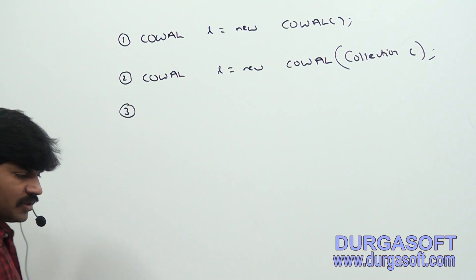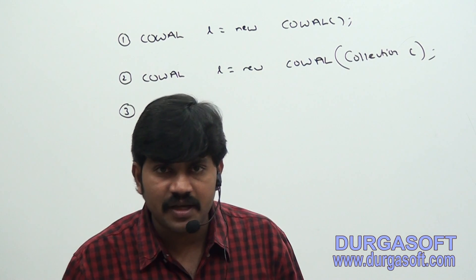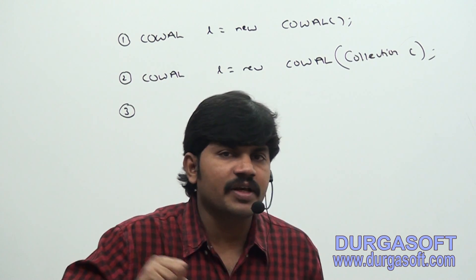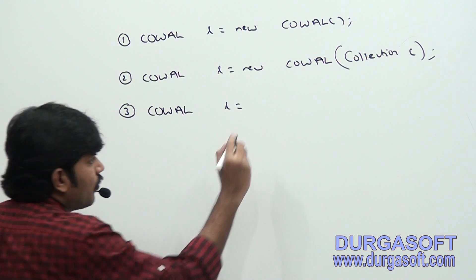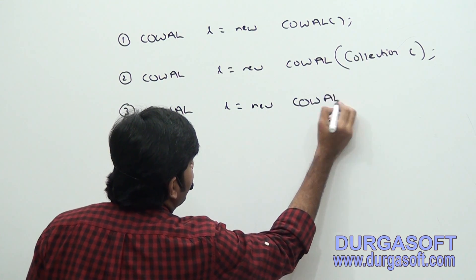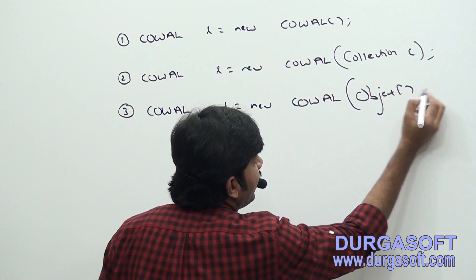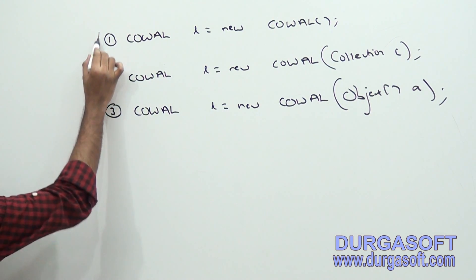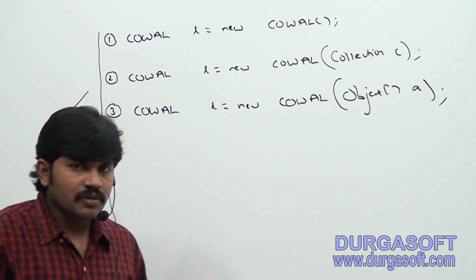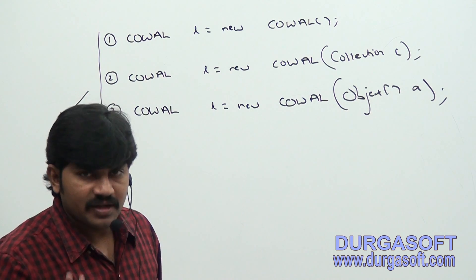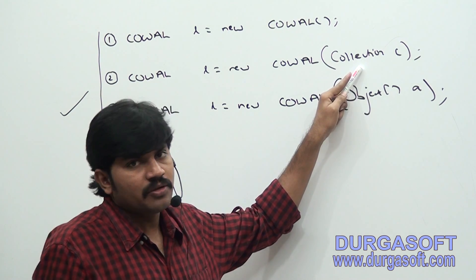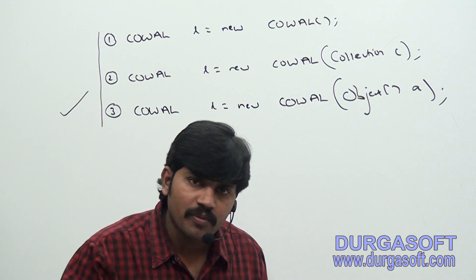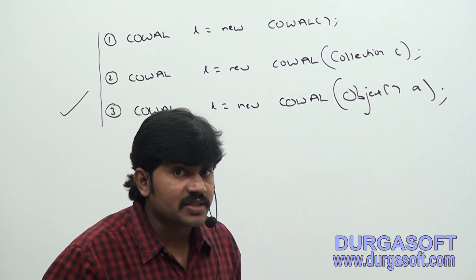The third constructor: if an object array is there, for the given object array, how we can create a CopyOnWriteArrayList — CopyOnWriteArrayList l = new CopyOnWriteArrayList(objectArray). So there are three constructors: no-argument, for any collection object, and for the given object array. This covers the constructors of CopyOnWriteArrayList.